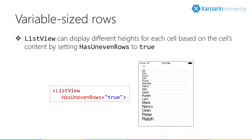If you have content that varies in height from row to row, you can get the ListView to size each row independently by setting the HasUnevenRows property to true. This flag causes the ListView to consult the cell representing the visualization of the row. If the cell's height property is greater than zero, it will be used as the height for the row. If the value is zero, the ListView reverts to its default behavior. However, custom cells will probably not size properly without a little help.